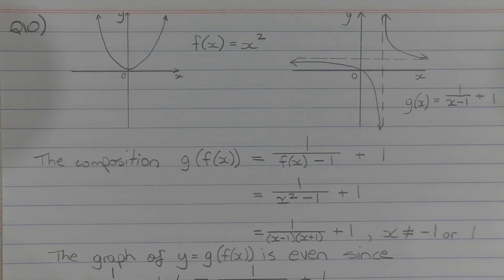An equation that could represent the graph of y equals f of x is f of x equals x squared, and an equation that could represent the graph of y equals g of x is g of x equals 1 over x minus 1 plus 1. This is the hyperbola 1 over x that has been translated to the right by one unit and vertically upward by one unit.